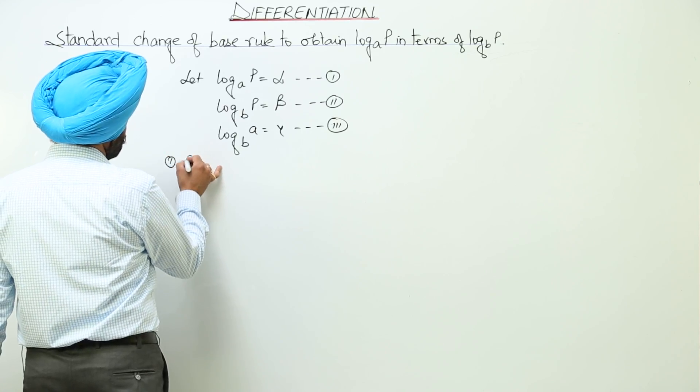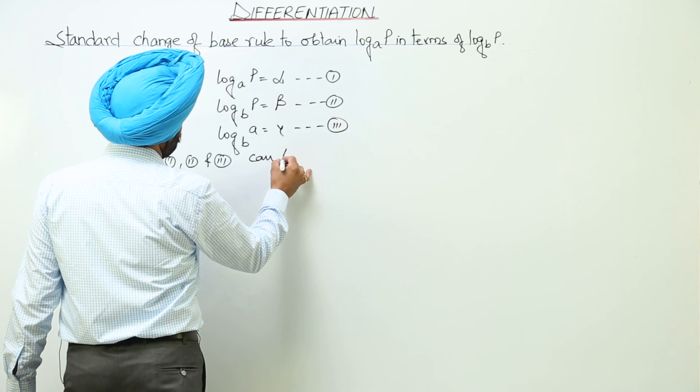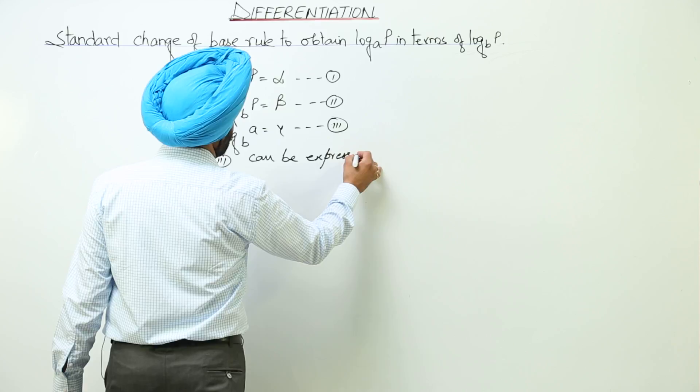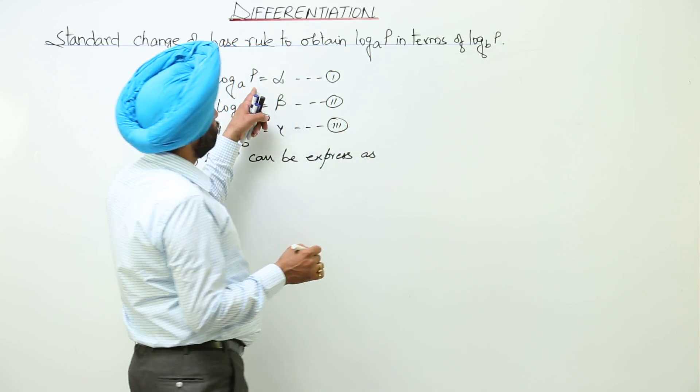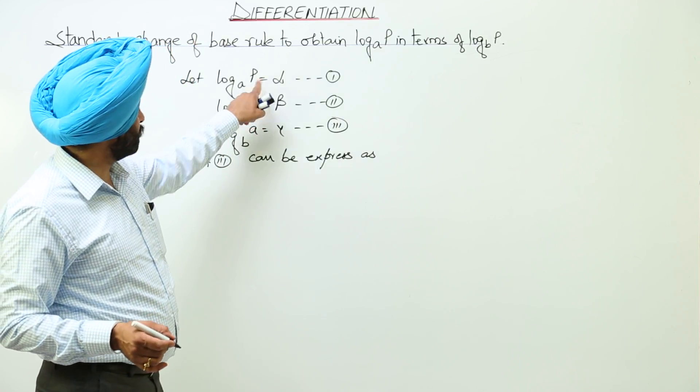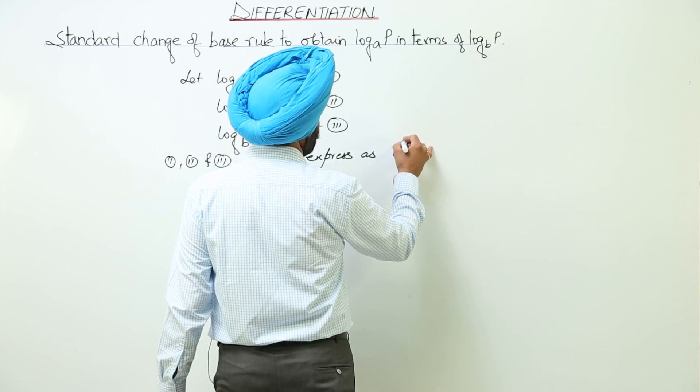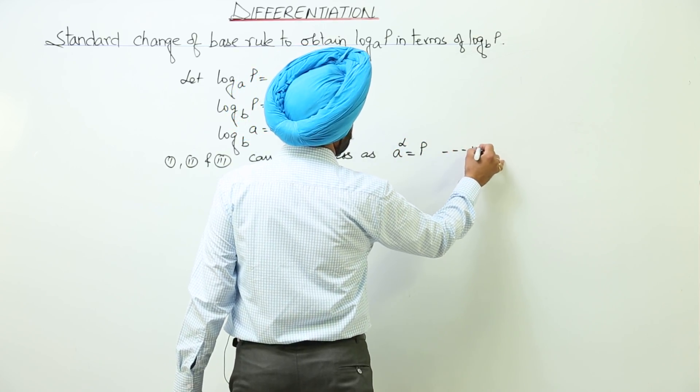Now equations 1, 2, and 3 can be expressed in exponential form. For equation 1, we can write a to the power alpha equals p. Let this be equation 4.